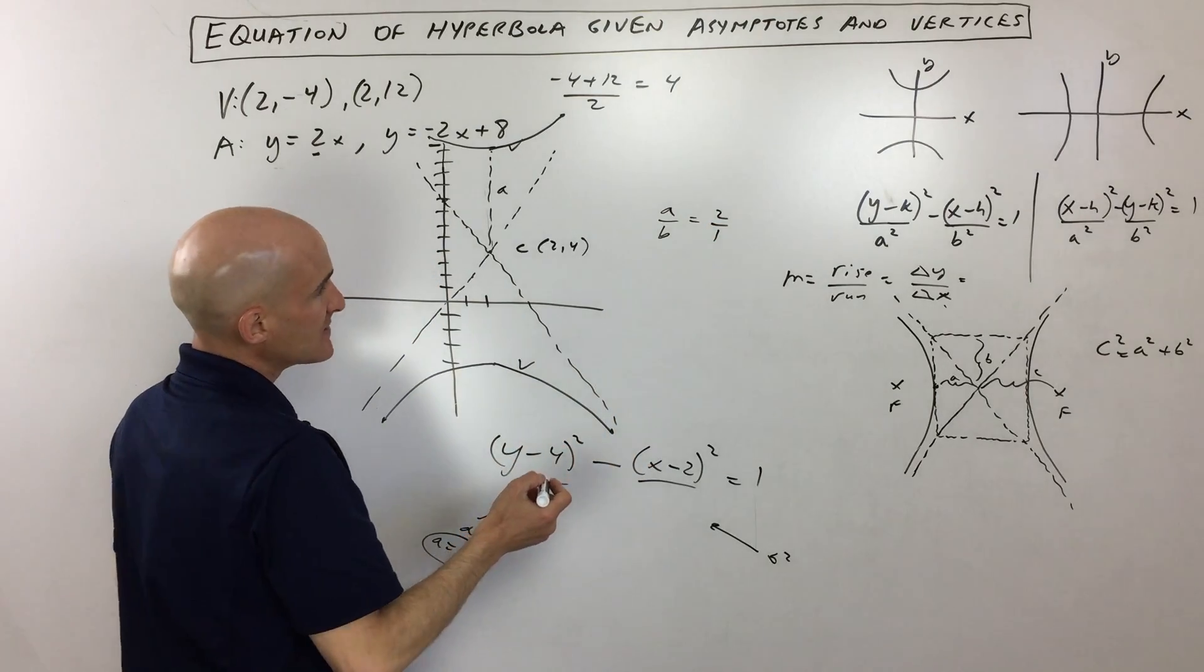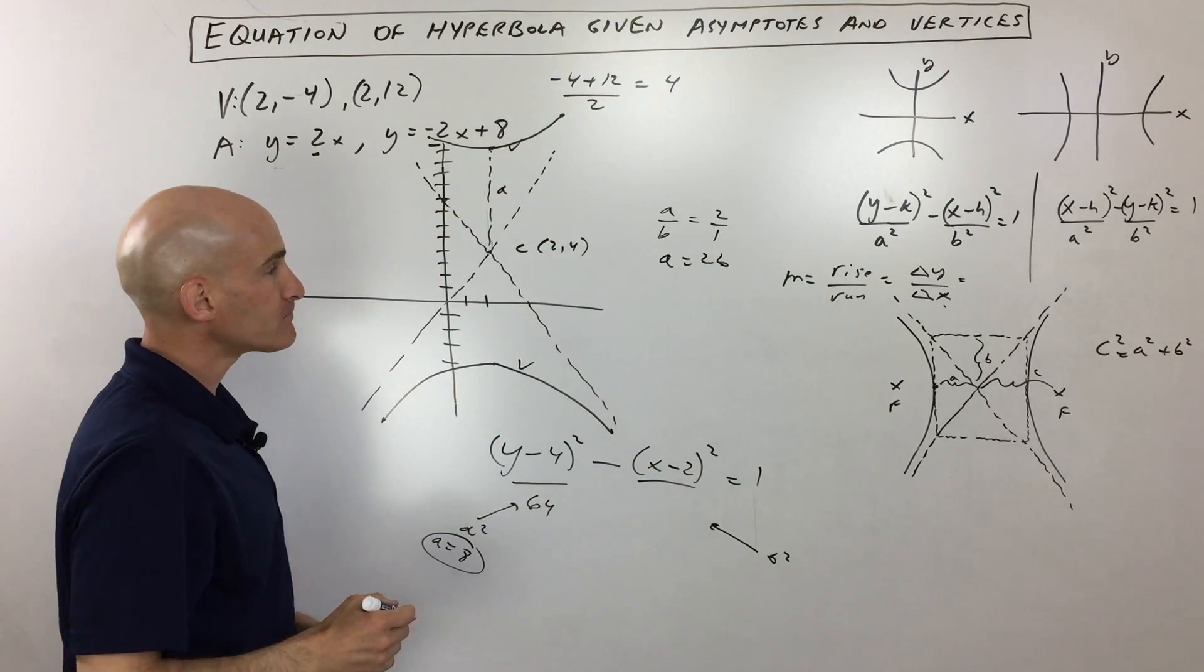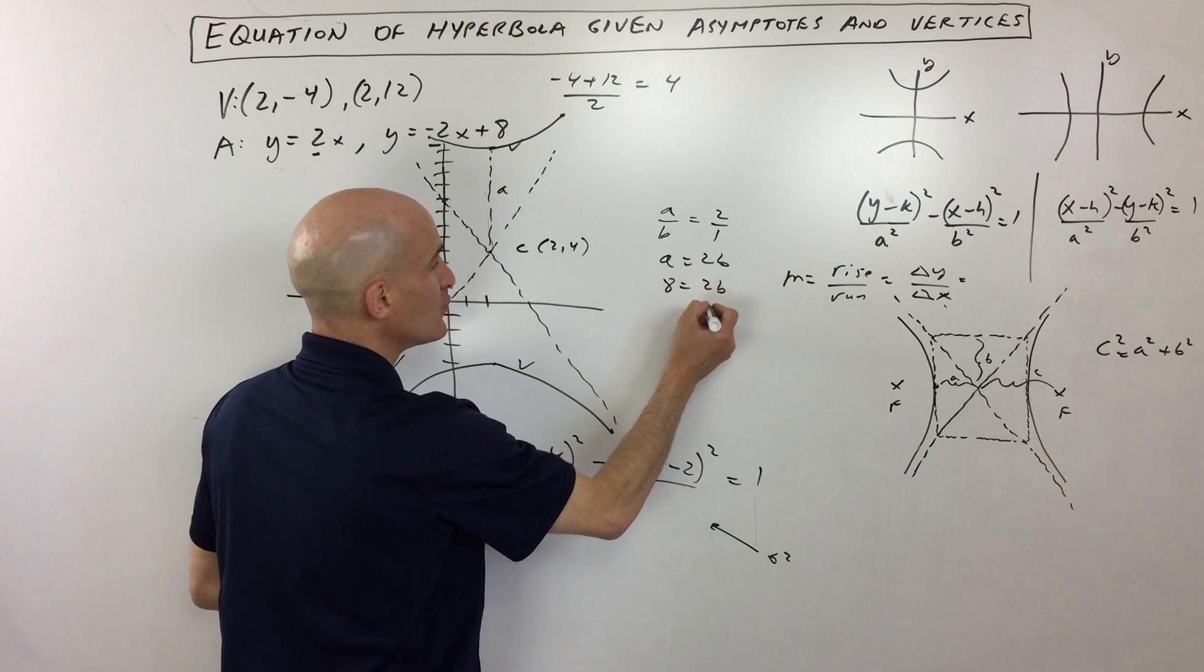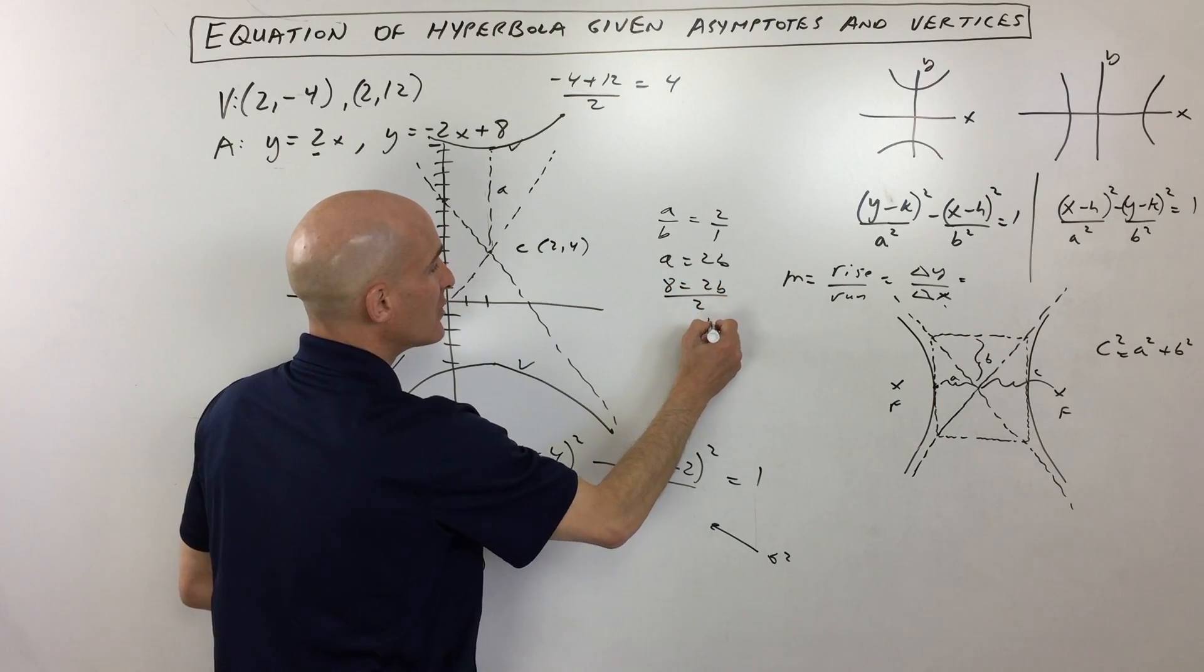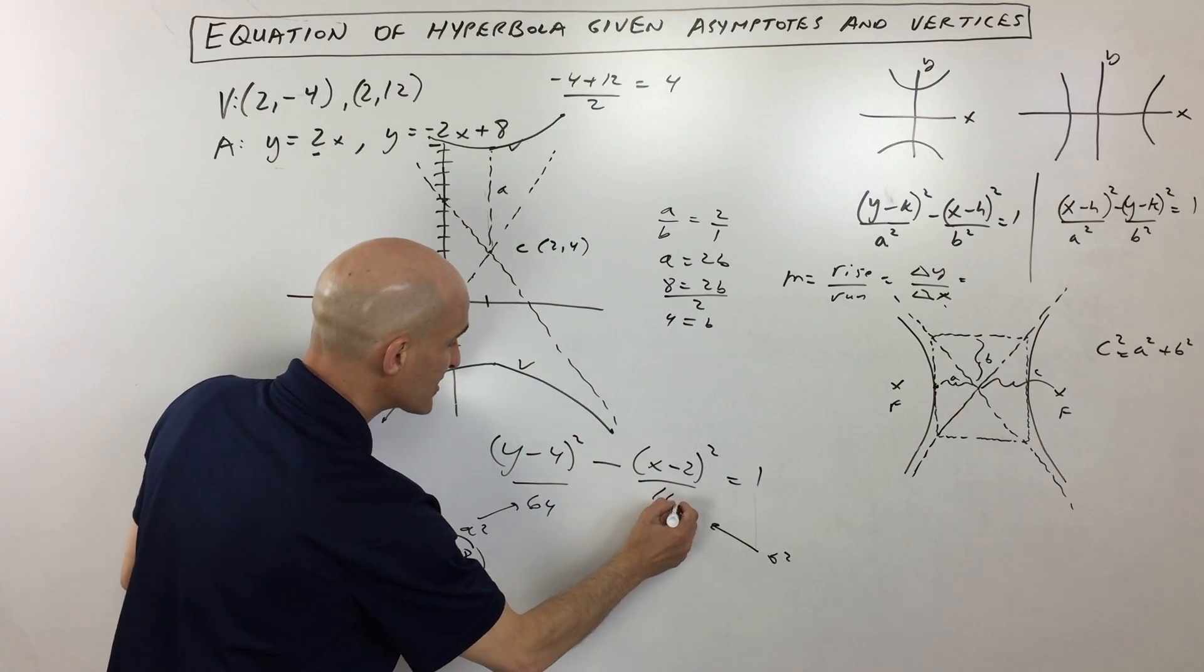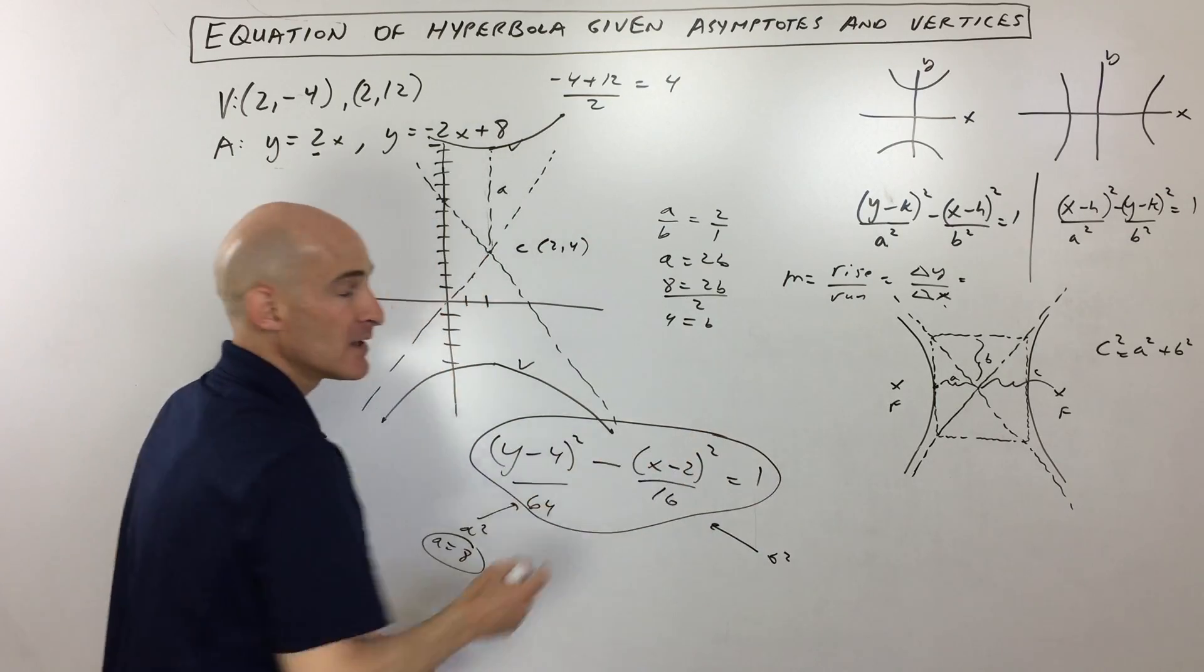So that means that we have a is equal to 2b, right? And we know that a is 8, so 8 equals 2b, divided by 2, and you can see that b is equal to 4. But in our equation we want b squared, so this is going to be 4 squared which is 16. And there we go, that's the equation of our hyperbola given the asymptotes and the vertices.